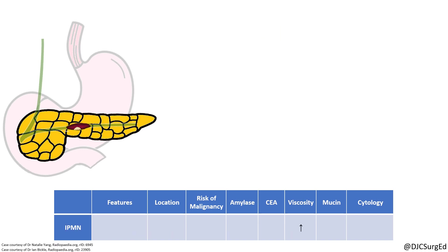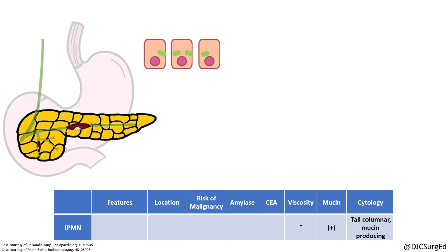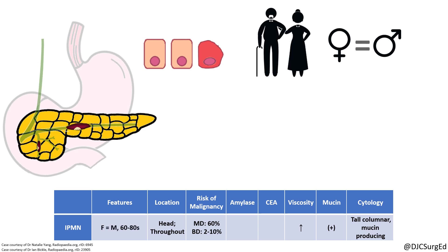Intraductal papillary mucinous neoplasms are mucin-producing neoplasms characterized by diffuse or segmental involvement of the main pancreatic duct or major side branches. IPMNs follow the dysplasia-invasive carcinoma sequence with differing malignant potential based on anatomic and histologic characteristics. Main duct IPMNs involve the main duct diffusely or segmentally, whereas branch duct IPMNs can occur anywhere within the pancreas with a lower risk of malignant transformation. Most are found incidentally on imaging in the 6th to 7th decade of life and affect males and females equally. On fluid analysis, these tumors have elevated amylase levels because of ductal continuity as well as elevated CEA levels.